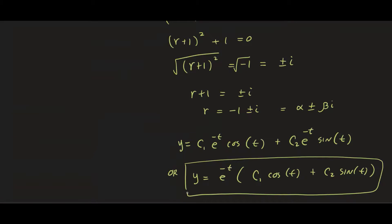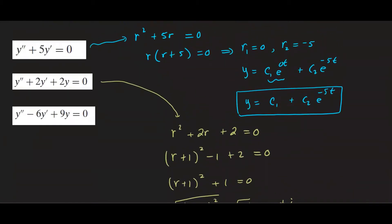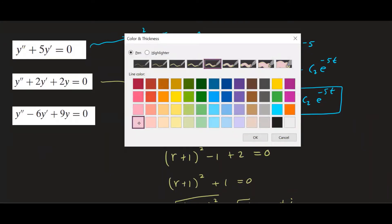Now the last scenario is the last example. What if the roots are none of these, right? So let's take a look at the third example. So again go ahead and write out the characteristic polynomial.